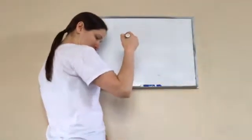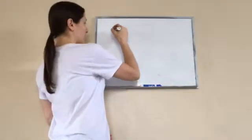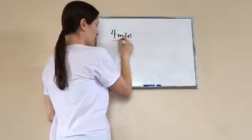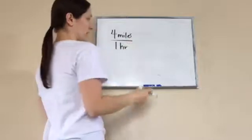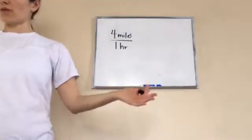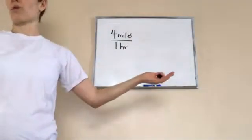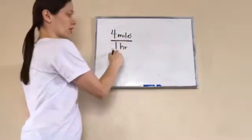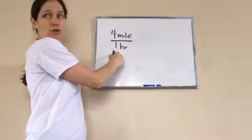So, for example, let's say something was 4 miles an hour. Let's say you could run 4 miles in an hour or you could walk 4 miles in an hour. That's 4 miles per hour.